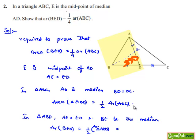But from the above, we have that area of triangle ABD is half times the area of triangle ABC. So let us substitute that. Then we get area of BED equals half times half times area of ABC.